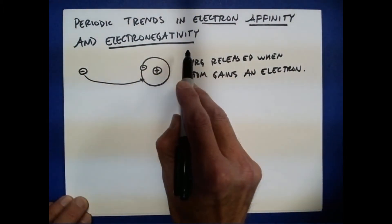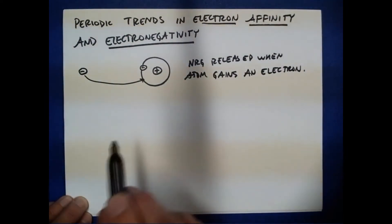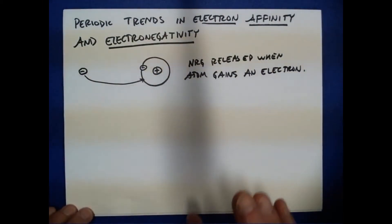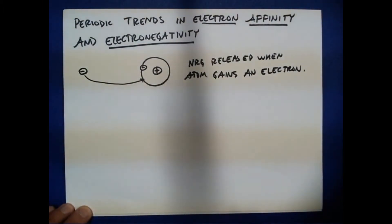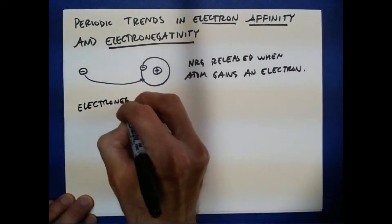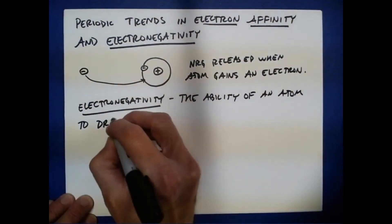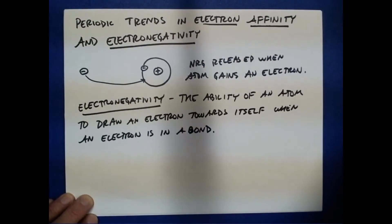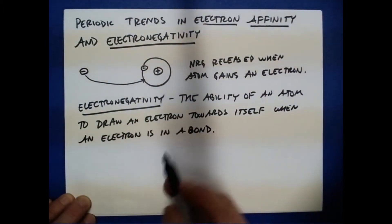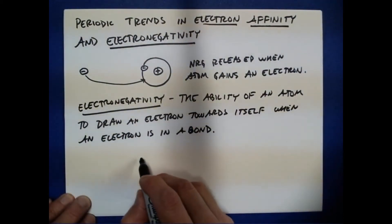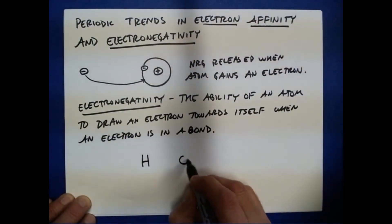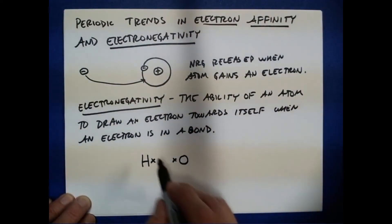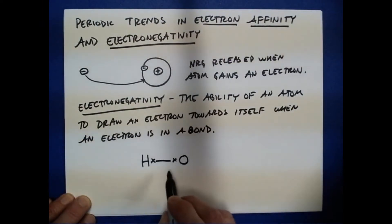Electronegativity is closely related to this idea, but it's slightly different. Electronegativity is the ability of an atom to draw an electron towards itself when that electron is in a bond. Just imagine there's a bond between a hydrogen atom and an oxygen atom, and these two atoms are sharing two electrons, which I'll designate as x's, with a line between them to designate a bond.